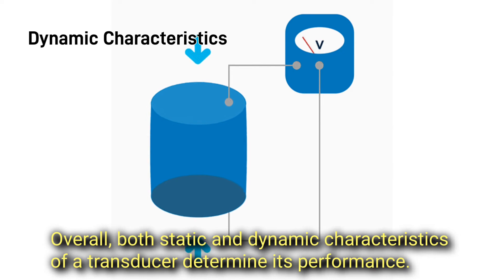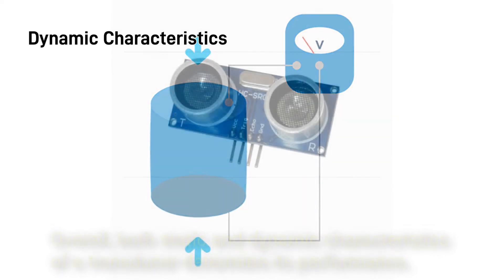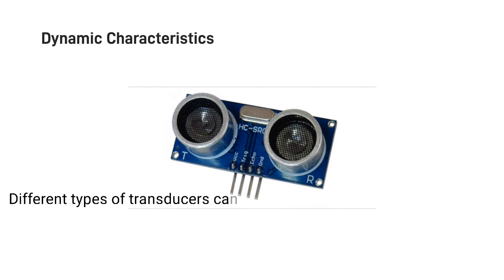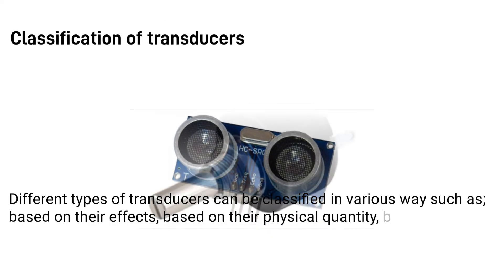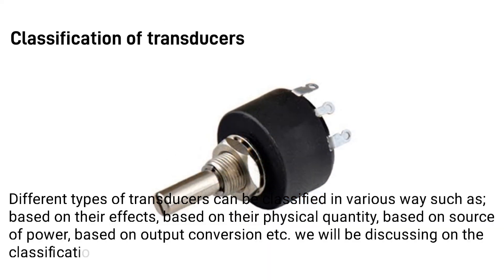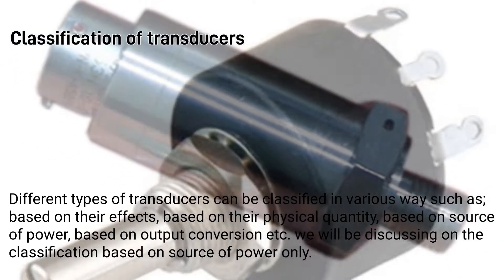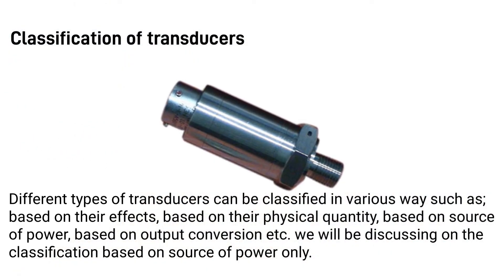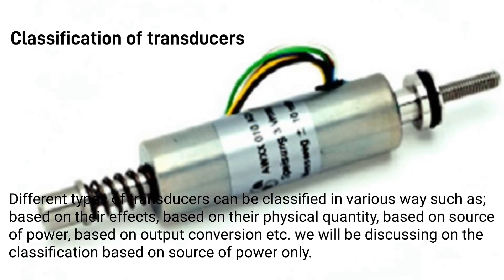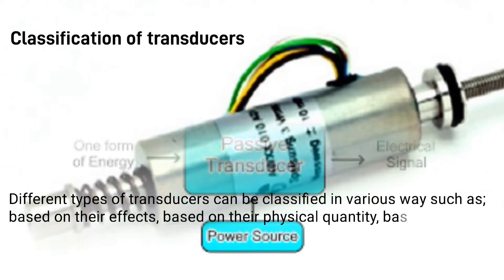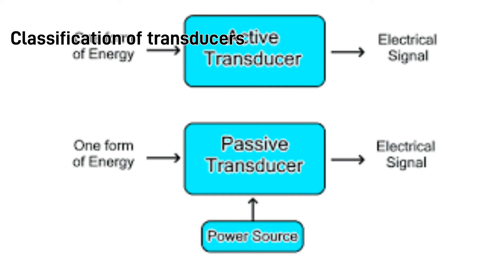Overall, both static and dynamic characteristics of a transducer determine its performance. Different types of transducers can be classified in various ways, such as based on their effects, physical quantities, source of power, or output conversion. We will be discussing the classification based on source of power only.